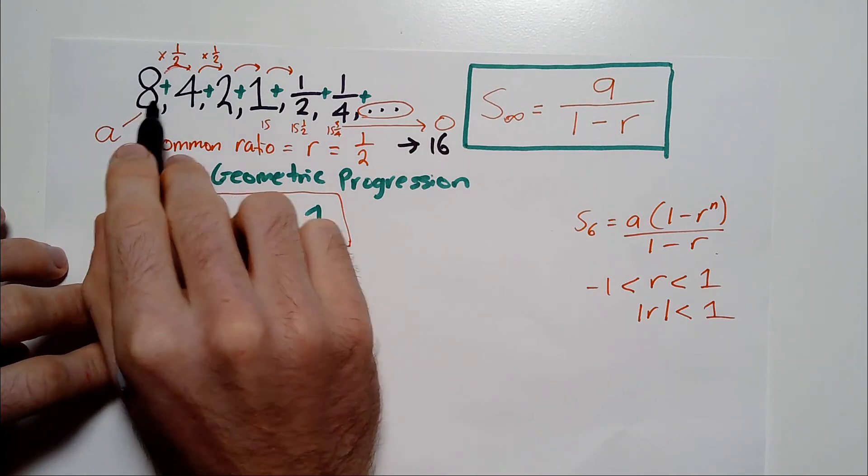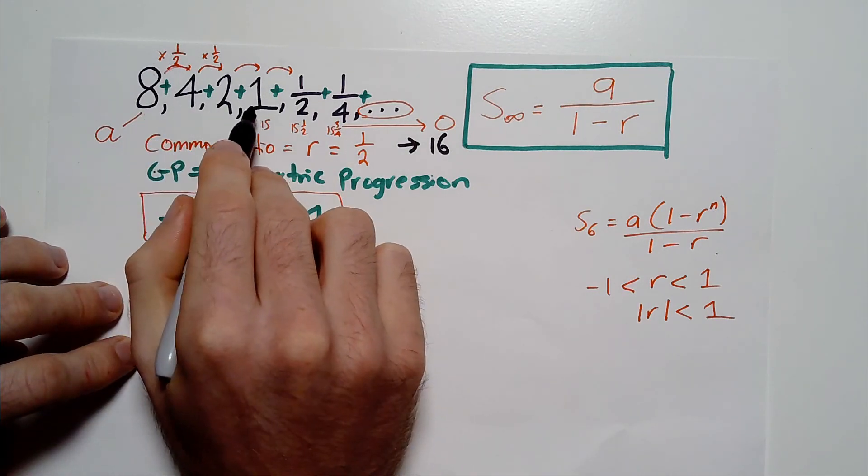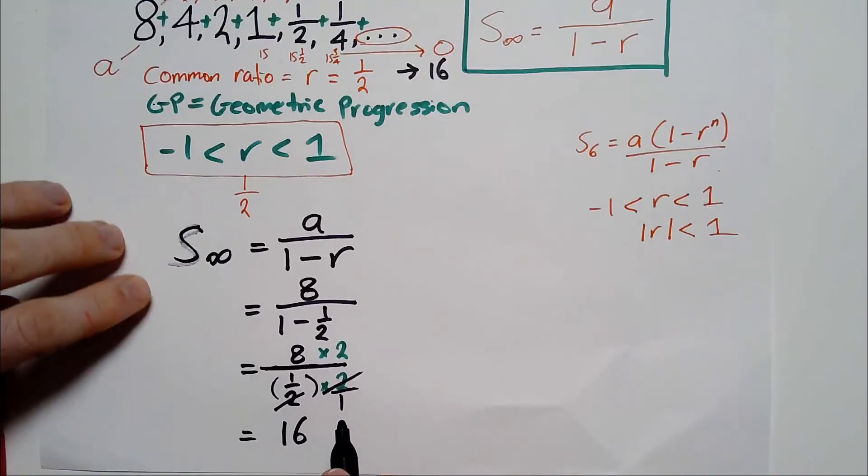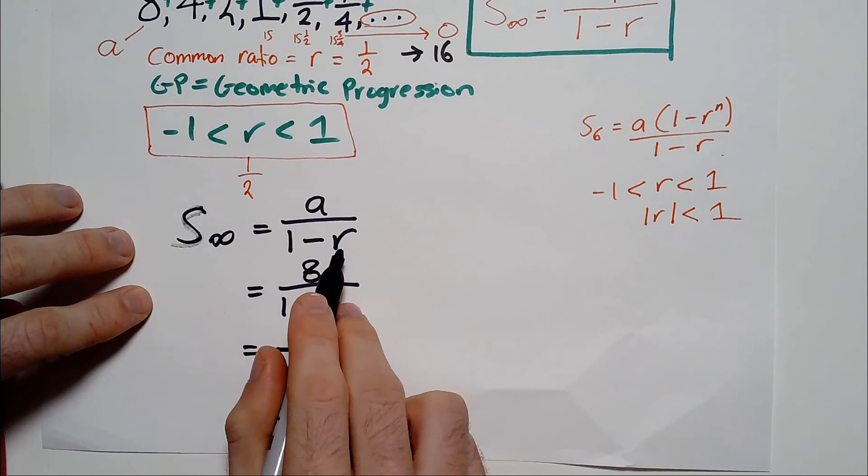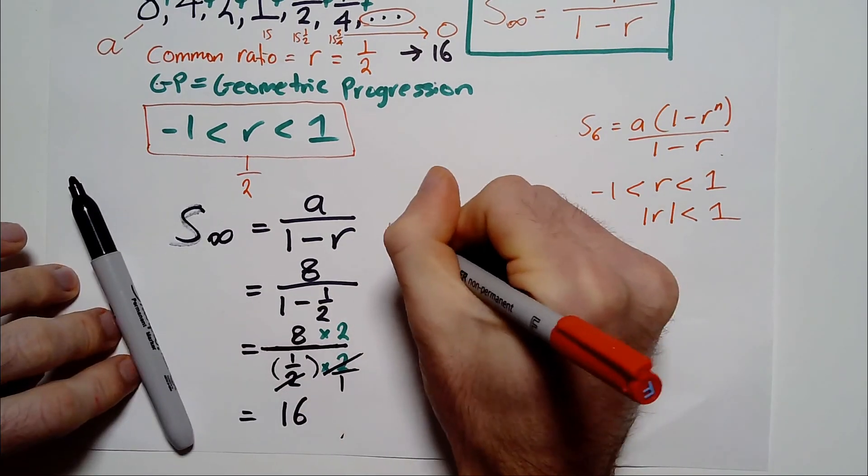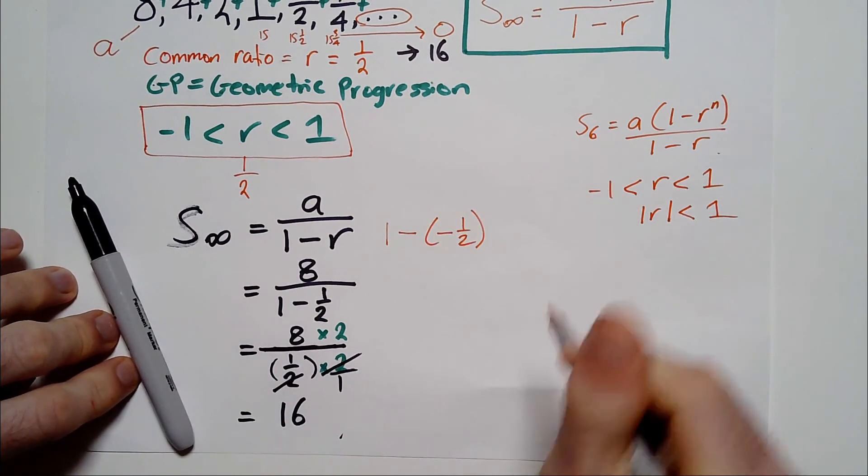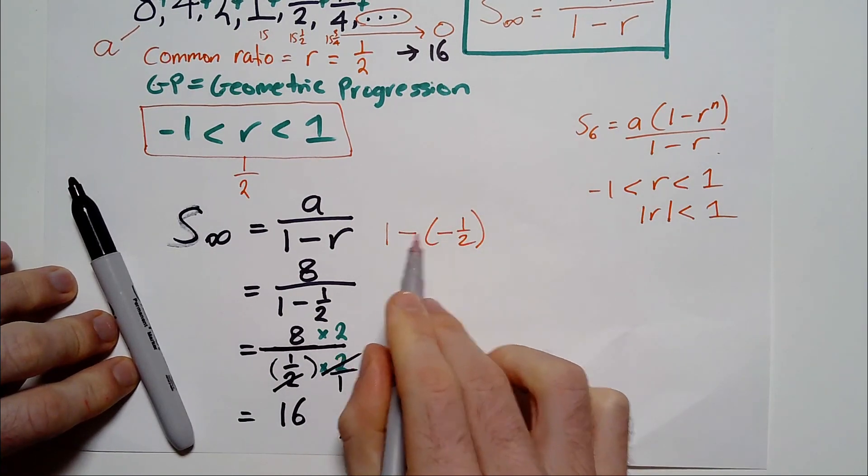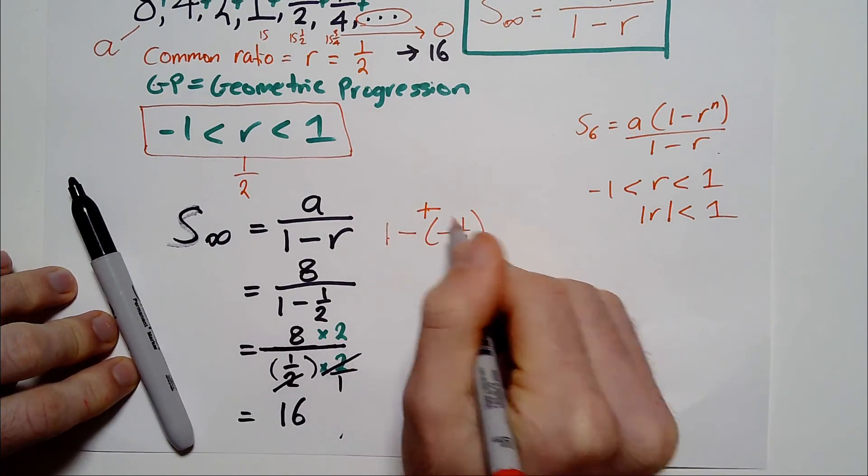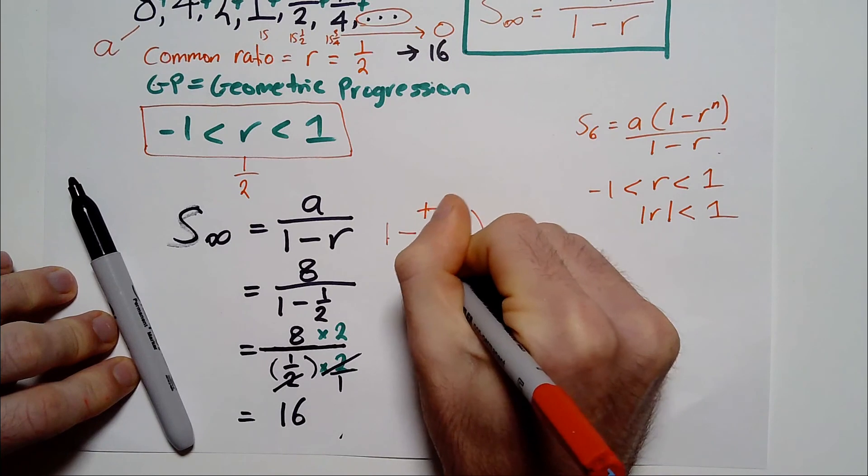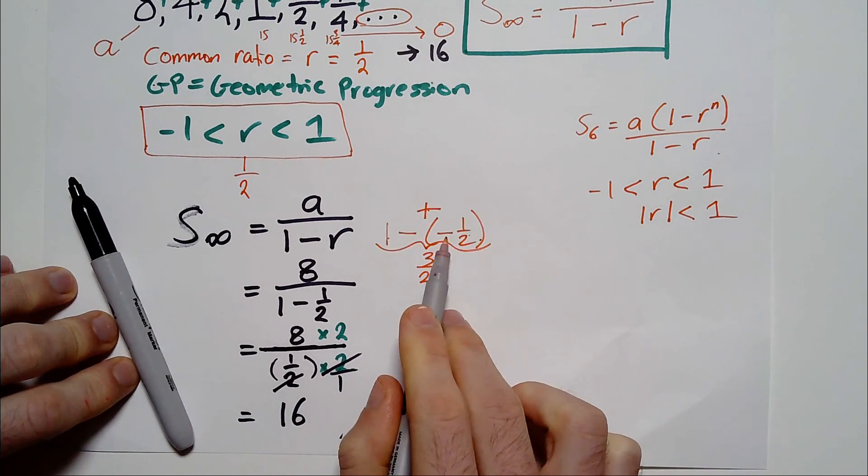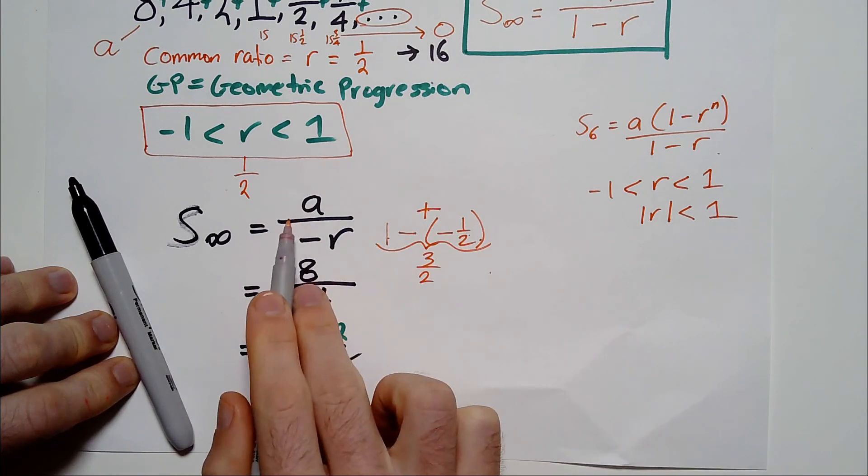Even if it said 8 and negative 4, then positive 2, then negative 1, meaning the common ratio was negative a half, it would still work. You would still be able to get an answer by putting it in here. Just be careful when the ratio is negative, because you will end up with 1 minus a negative ratio like this. So it would be 1 minus negative a half, if the ratio was negative a half, which would create a positive there. So it would be 1 plus a half, which would be 3 over 2. So that would be a situation where the R was negative a half. You would get the positive on this denominator here.